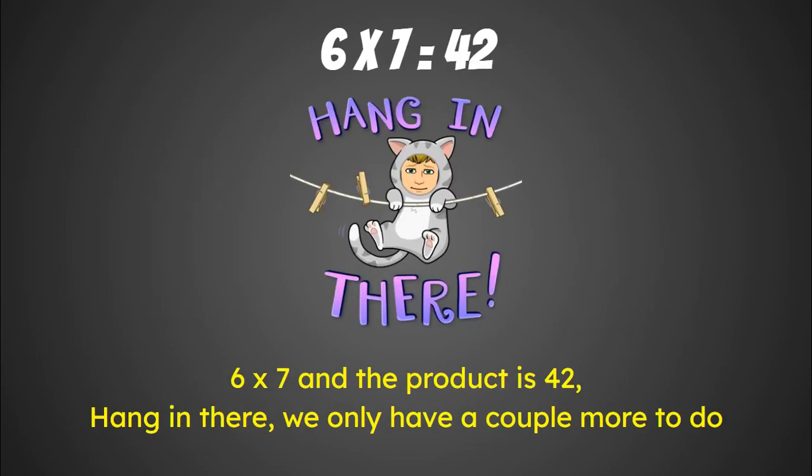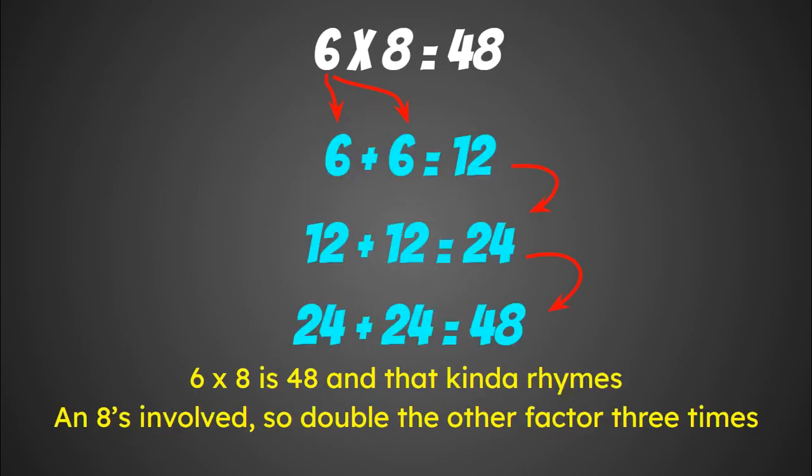Six times seven and the product is forty-two. Hang in there, we only have a couple more to do. Six times eight is forty-eight and that kinda rhymes. And eight is involved, so double the other factor three times.